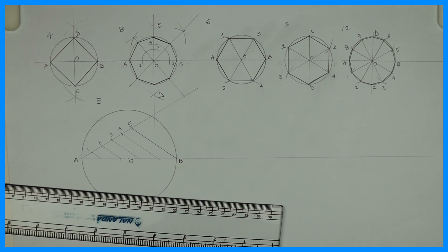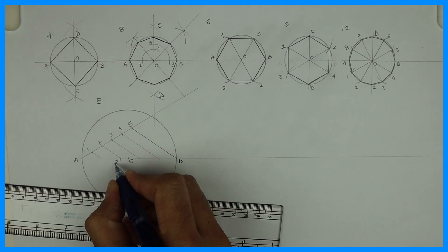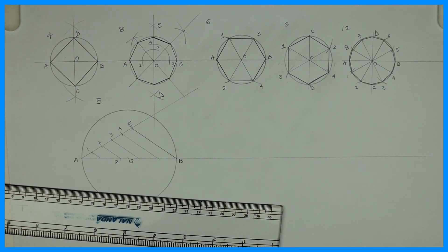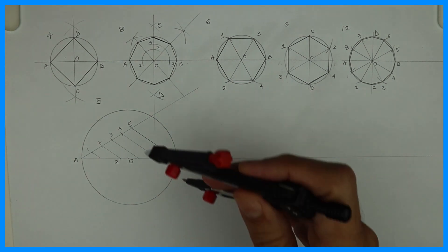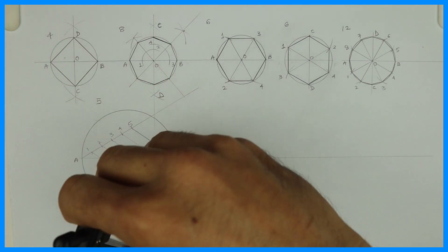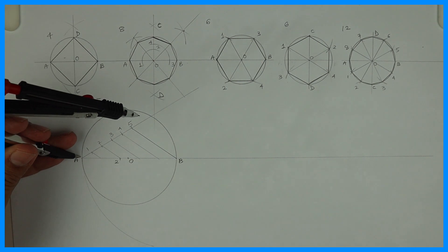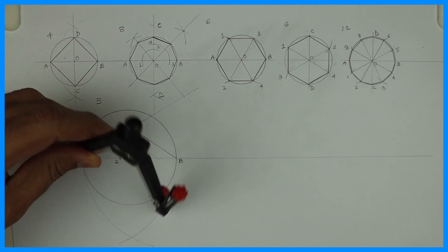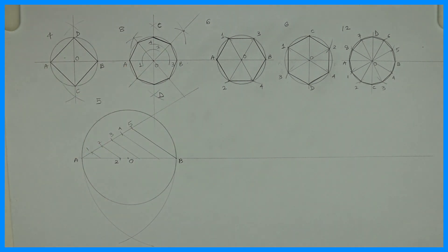Now what we need to do: we need to mark 0.2 on this. On diameter AB we need to mark 0.2. This is very important. After that you take B to A and you draw arc down. You can cut up also, but I don't have a place so that's why I'm doing it down. This is point C.